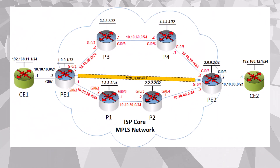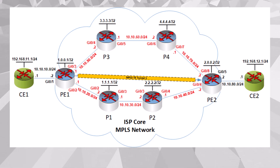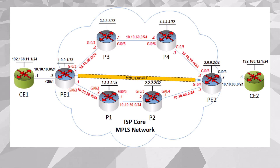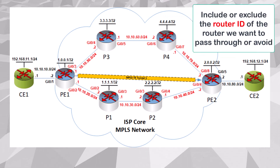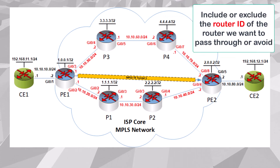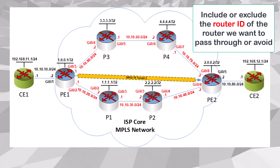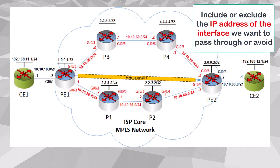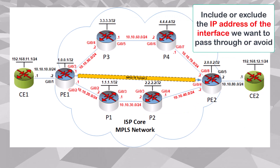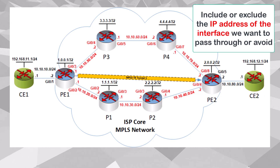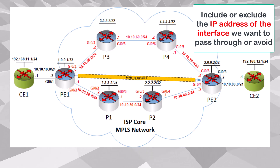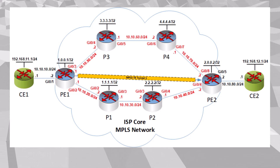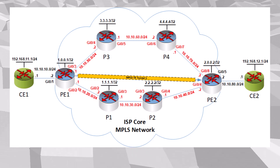Now to configure the explicit paths feature, there are several things we can constrain. We can include or exclude the router ID of the router we want to pass through or avoid, or we can include or exclude the IP addresses of interfaces we want to pass through or avoid. Whether we use the router ID or a specific interface address, the command is the same.